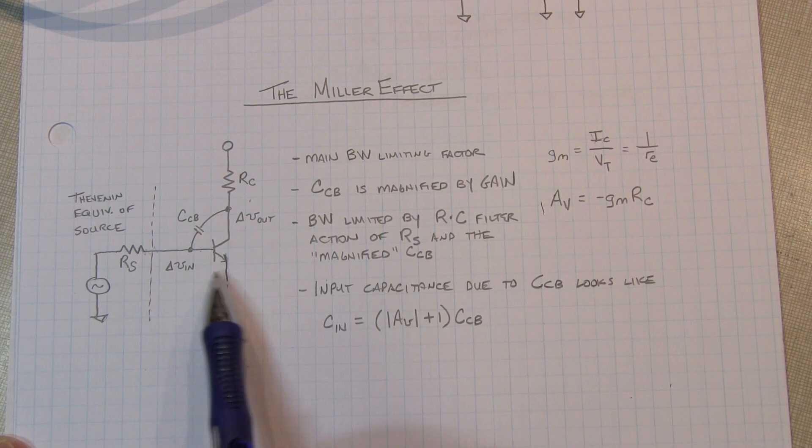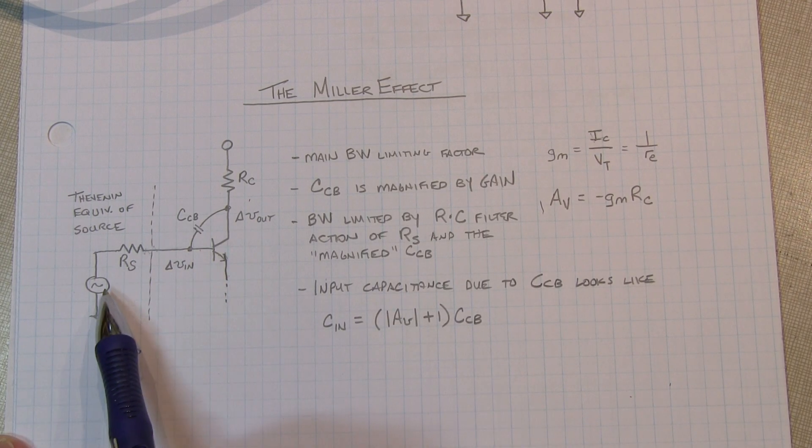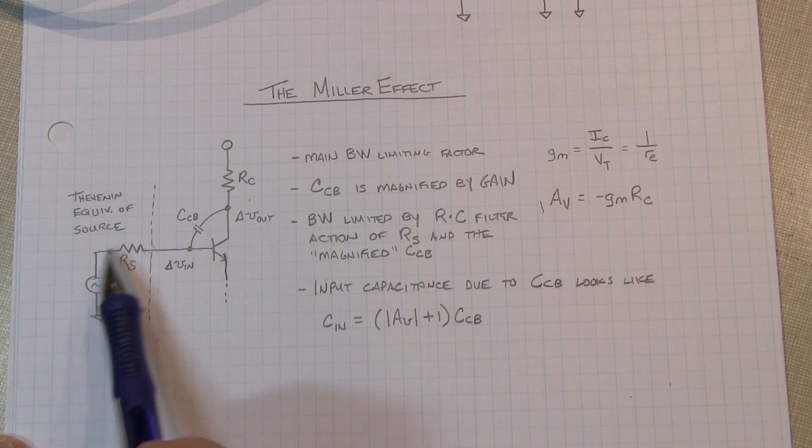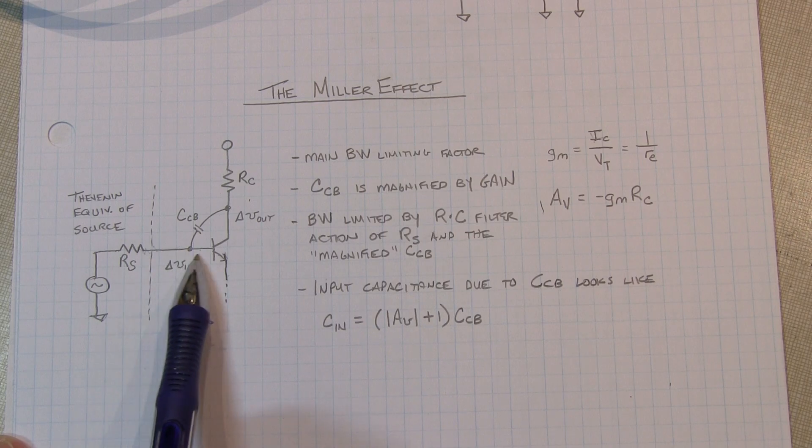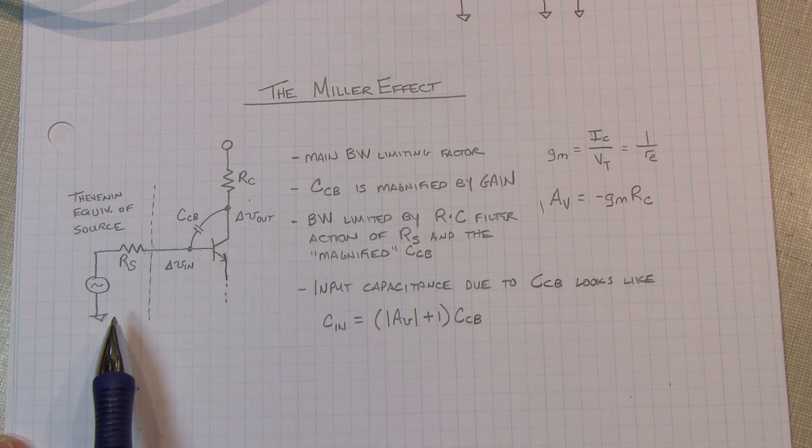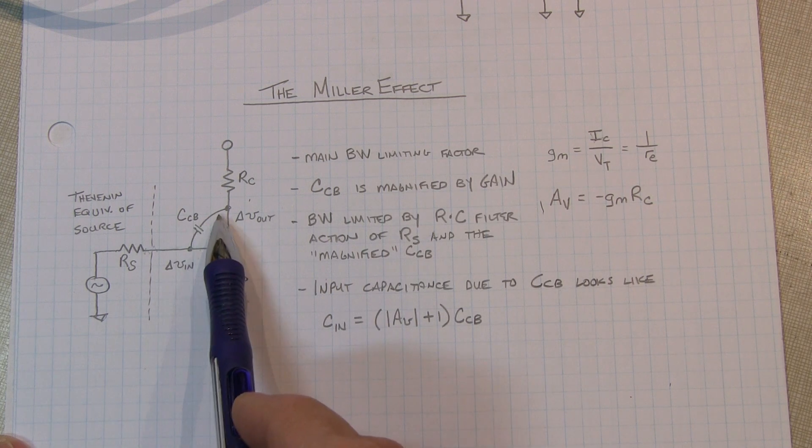Now consider this little snippet of a common emitter amplifier. We've got some signal coming from some source. I just modeled that as a Thevenin equivalent here: some source voltage and some source impedance. Looking into the base of the transistor, we can see the base to emitter capacitance is going to shunt around that. We also see the collector base capacitance.